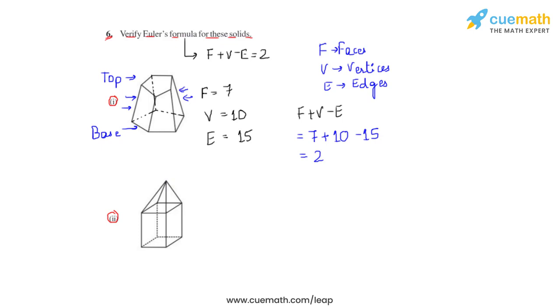So based on this observation, if we write the number of faces, as we see that there are three faces on top and for the cuboid there are six faces. So we can say that the number of faces for this would be 9.